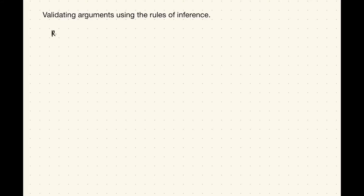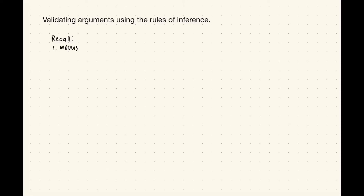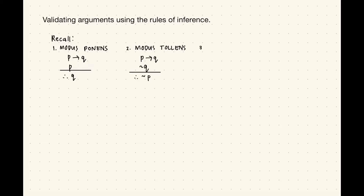This time let's try to work on an argument using the rules of inference without using a truth table. First, let's recall the three common rules of inference: modus ponens — if p then q, and p, therefore q; modus tollens — if p then q, and not q, therefore not p; and syllogism — if p then q, and if q then r, therefore if p then r.